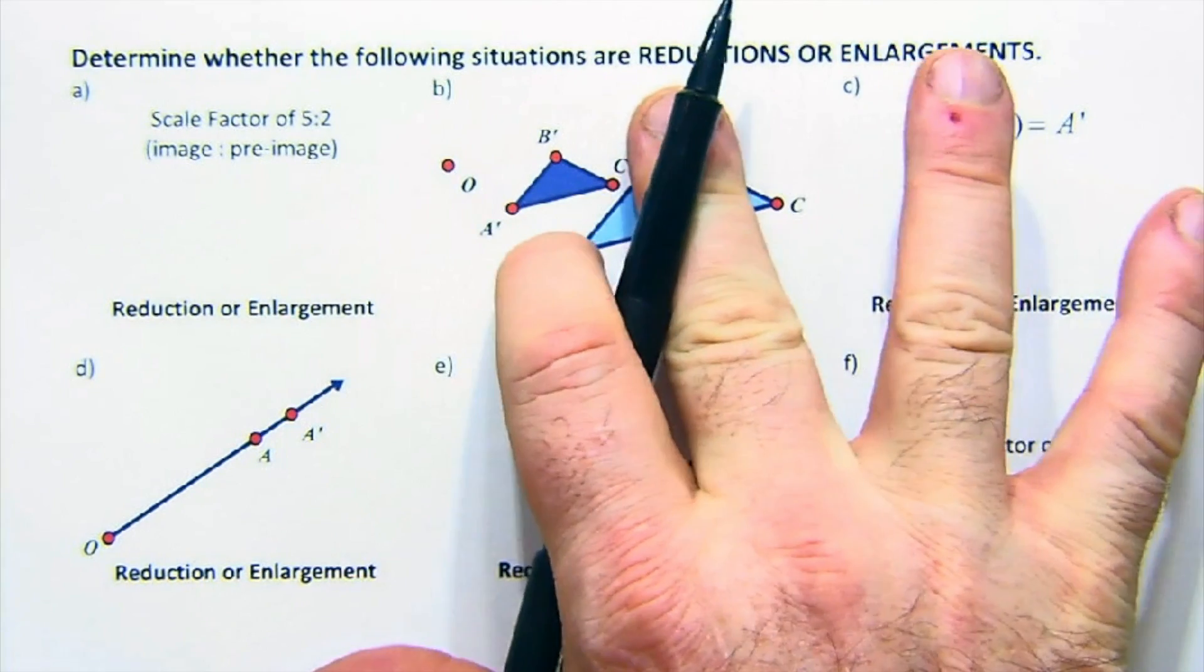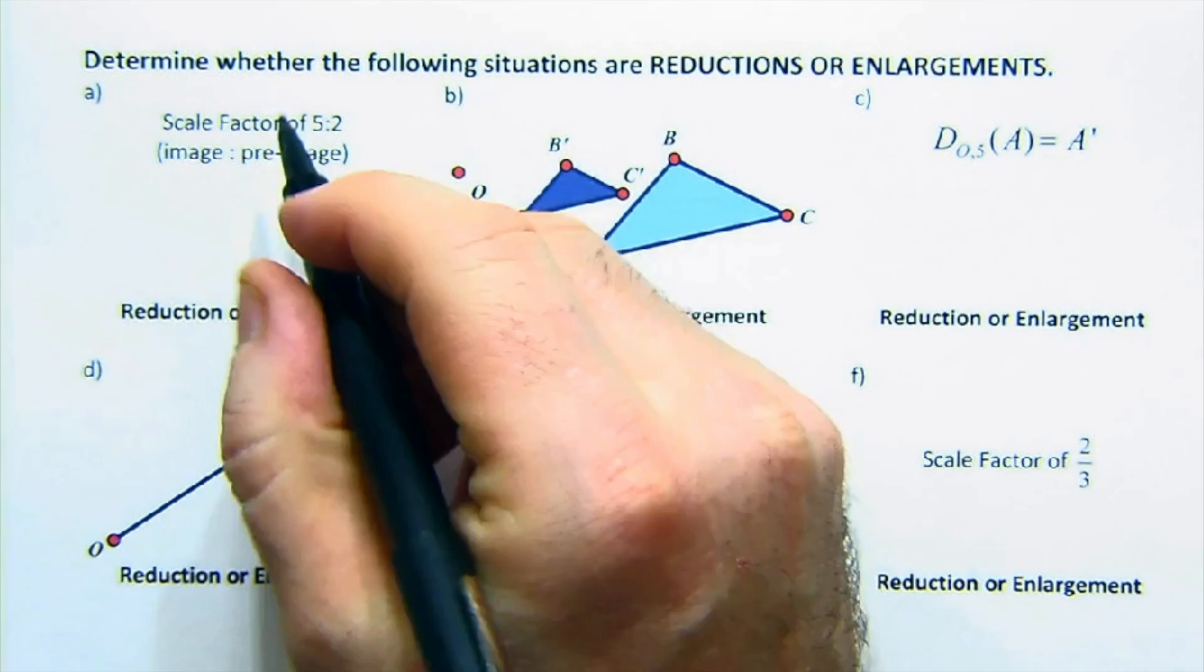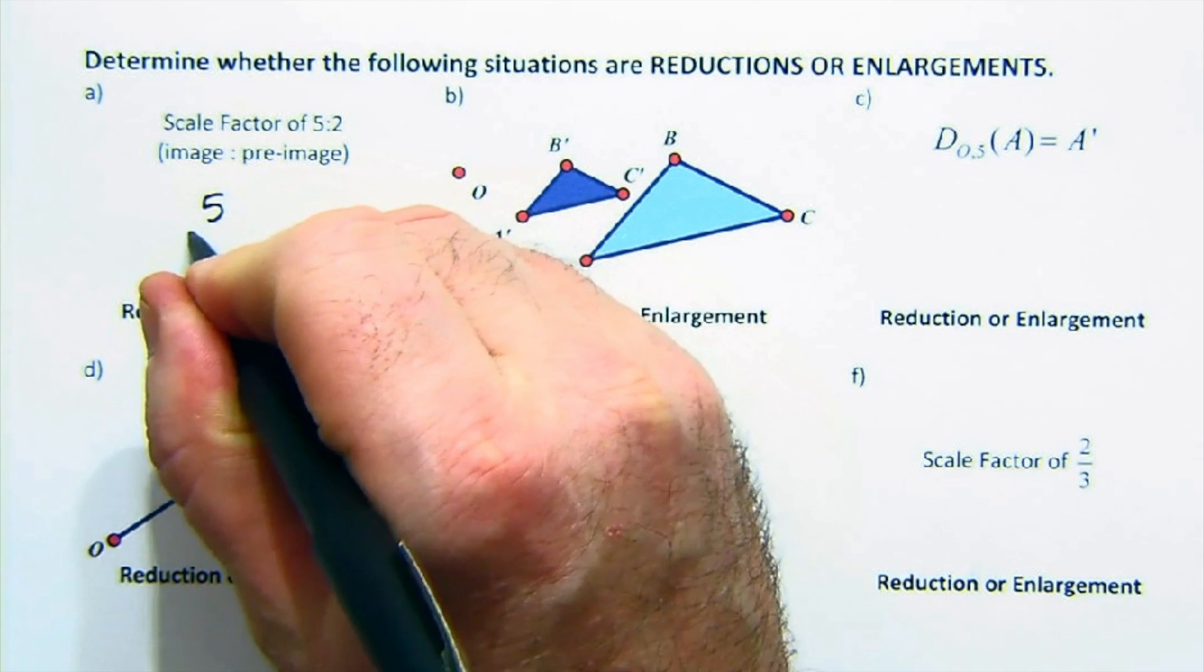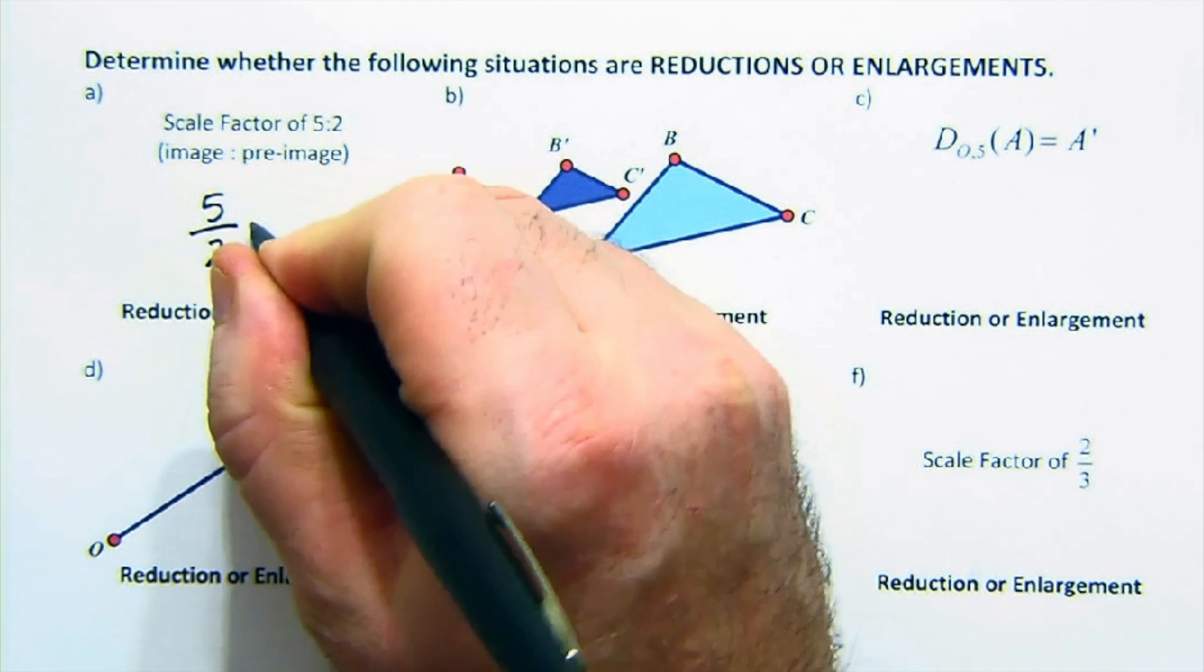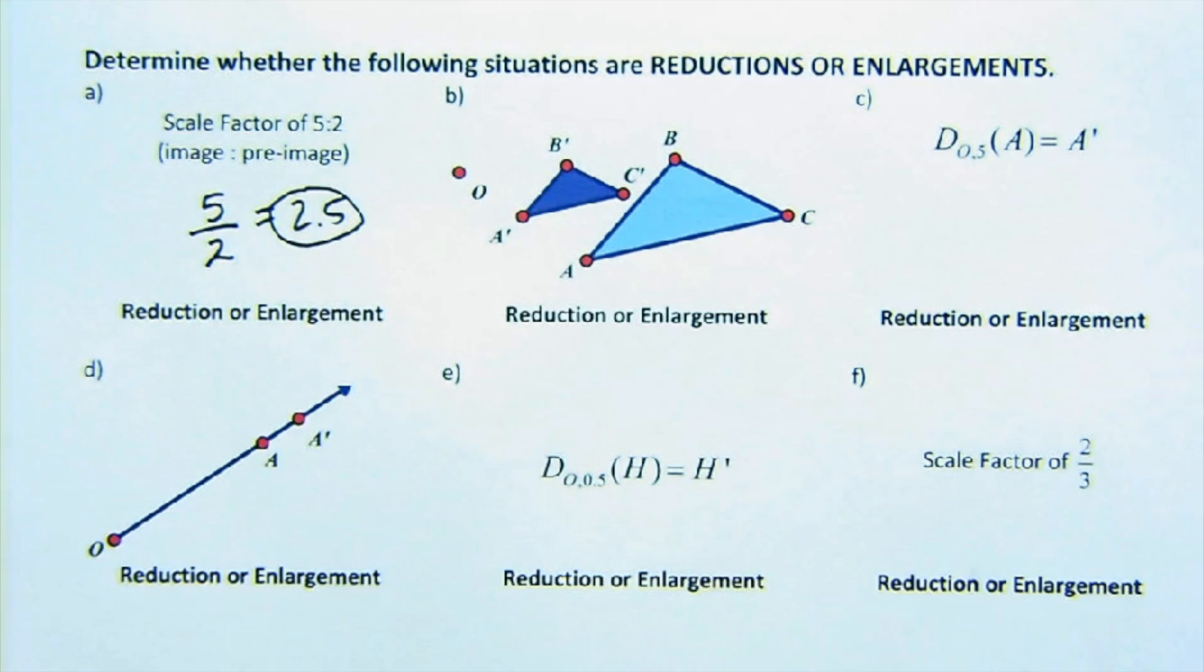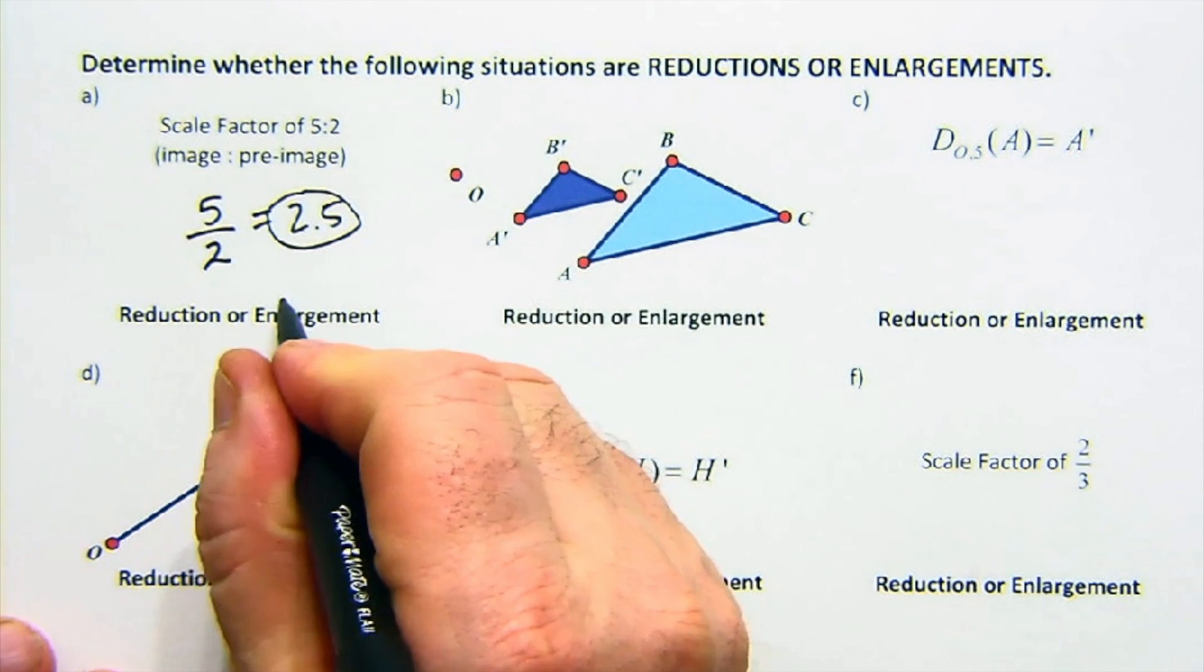understanding size of scale factors and how it applies to the layout. So these first questions just basically help you to understand whether we're getting larger, which is an enlargement, or reduction. And when it's written with a colon like this, basically it's the image over the pre-image, which is, in this case, 2.5. This is another way to think about it. It's two and a half times bigger. So this would be an enlargement.